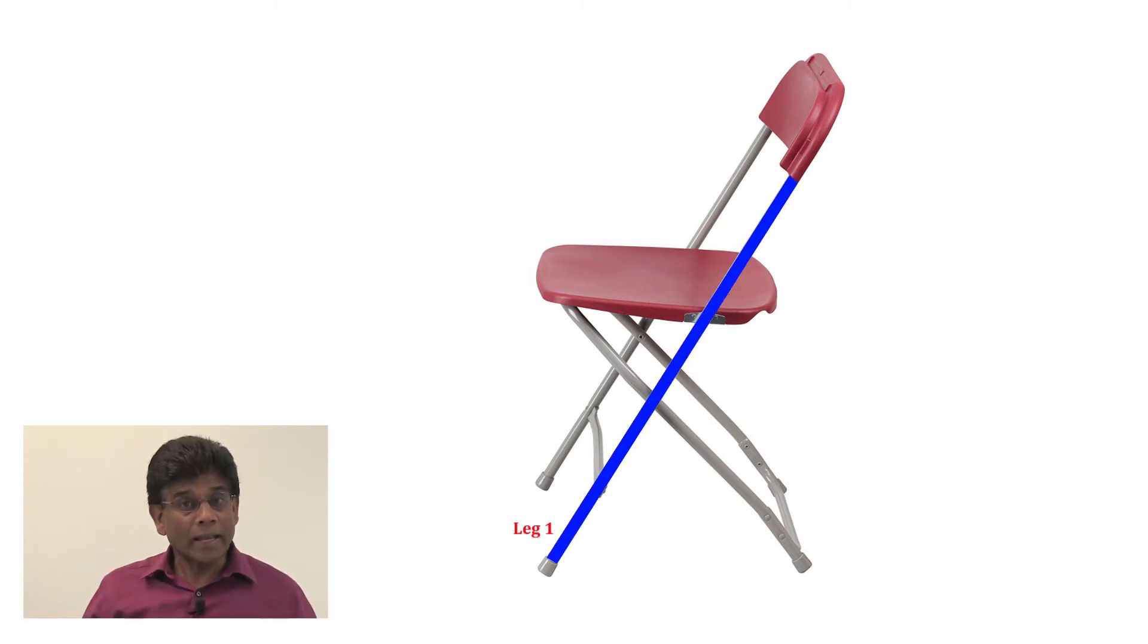The second leg goes from the floor to the seat, which is the flat surface where you sit. The seat connects the two legs.